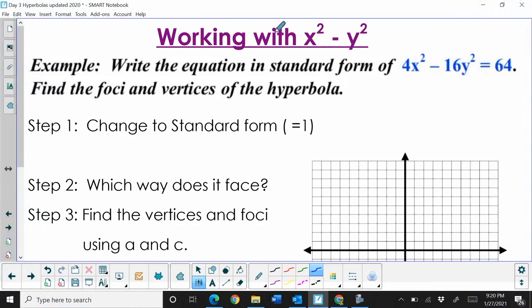Let's start with working with x² - y². If x² is first, that's going to face left and right because it's dominant on the x-axis. First, we need to write the equation in standard form. A hyperbola is always equal to 1, so we need to divide by 64.